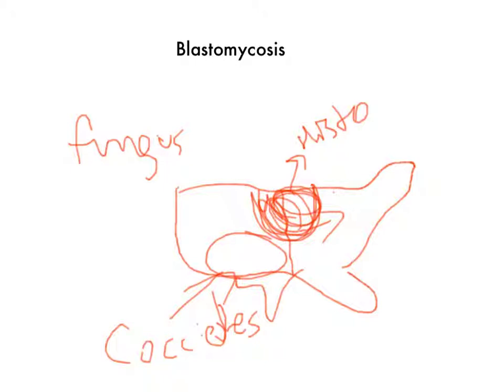Basically it's a fungus and it causes granulomatous pneumonia. You see these caseating granulomas form, so you have to differentiate between histoplasma and TB — but blastomycosis doesn't have person-to-person transmission like TB does.